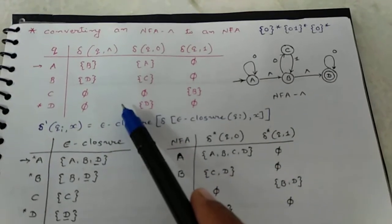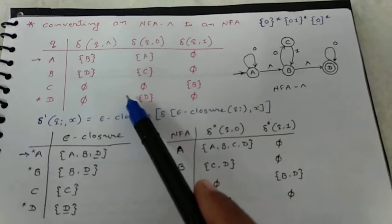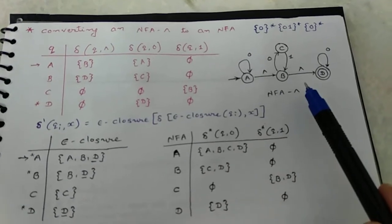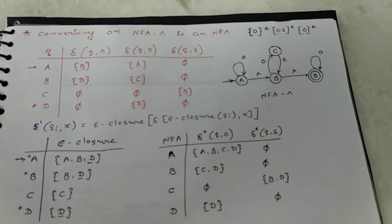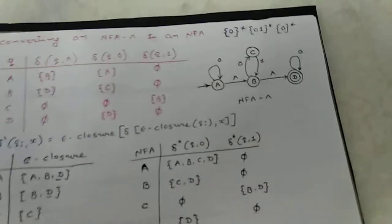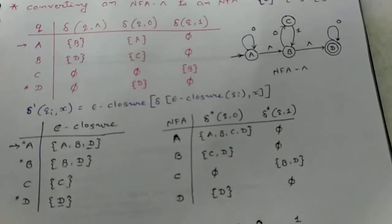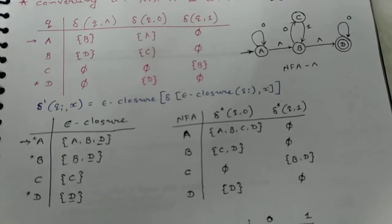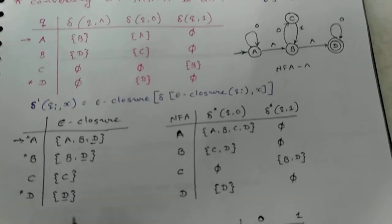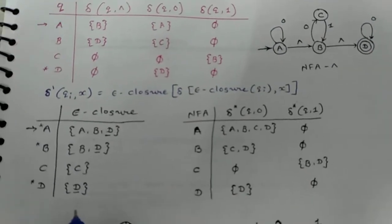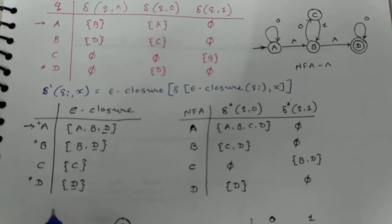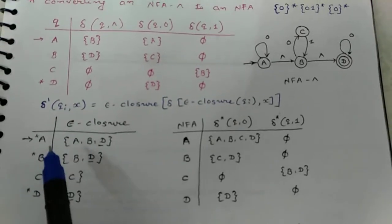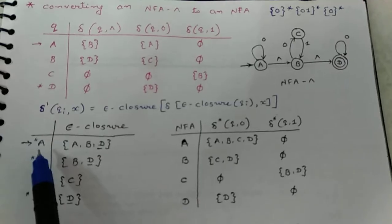Either a transition table is given or NFA-epsilon is given. The first step is to find the epsilon closure. How to find epsilon closure we have already discussed in our previous videos. First, find epsilon closure of A.